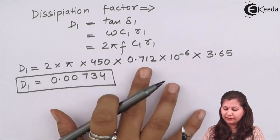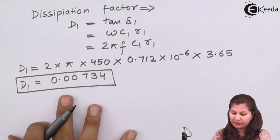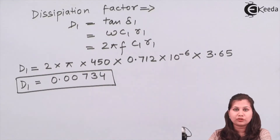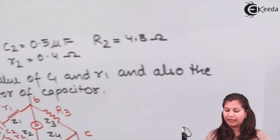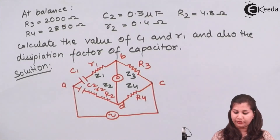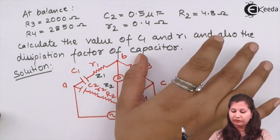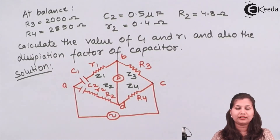Using π = 3.14 and multiplying all the terms, we get the dissipation factor as 0.00734. In this way we can solve problems based on the measurement of capacitance using the De Sauty bridge. There is no need to remember the balance equations — we can derive them using the bridge circuit and the general balance condition Z1·Z4 = Z2·Z3. I hope this problem is clear to you. Thank you.